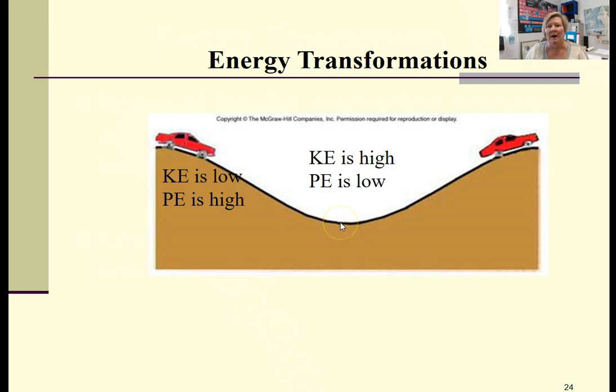So at the bottom of the hill, the kinetic energy would be the highest and potential the lowest. As it goes back up the hill, we're going to decrease kinetic energy and increase our potential energy.